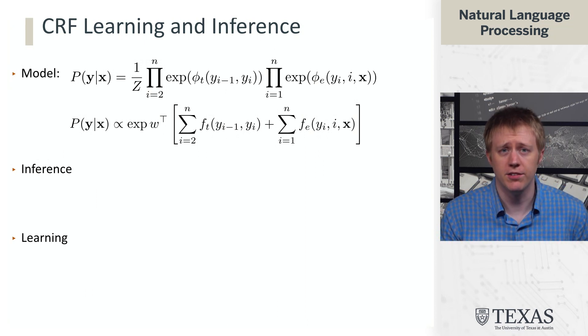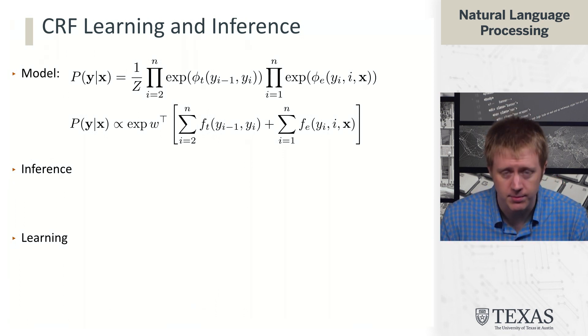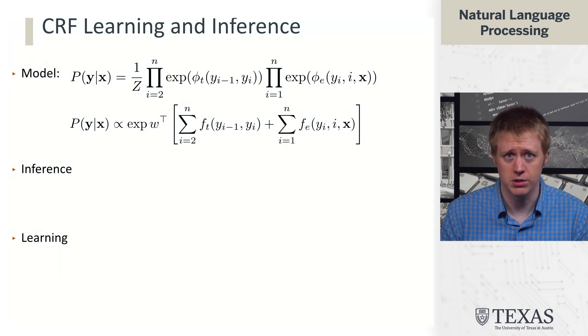So this was our model, and if I give you a set of features and a weight vector, you can at least compute the term inside this exponential here, but we haven't talked about how to actually find the most likely tag sequence y or do any prediction based on this. So that's going to be our first bit here, which is inference.